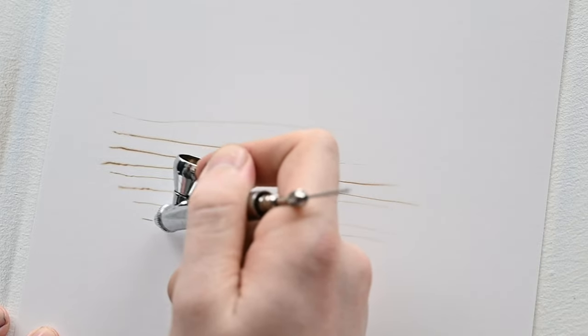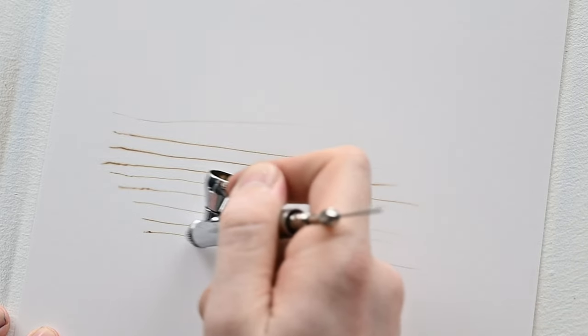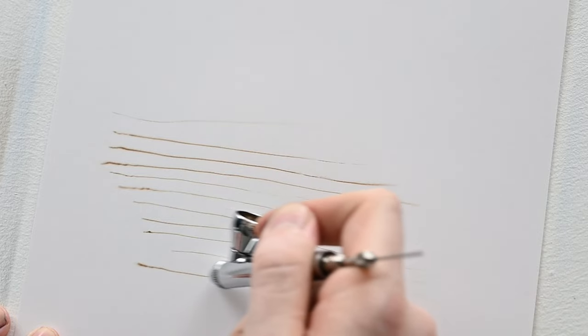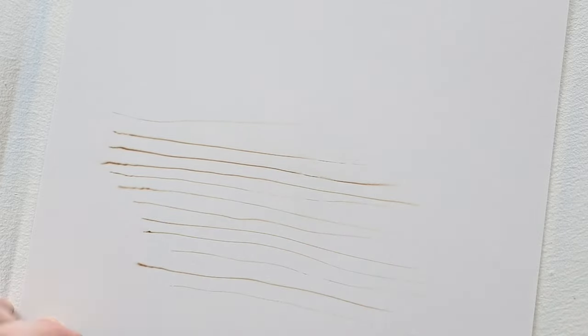So from here, let's move on to a simple paint test. It's very easy to paint thin lines with the Neo and you're going to get the same line width as you'd get from any other airbrush right around 0.25 to 0.3 millimeters.